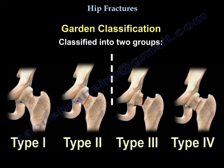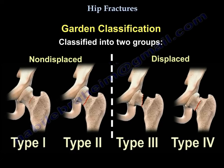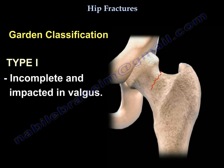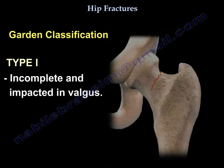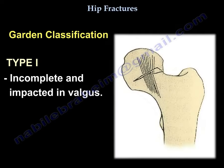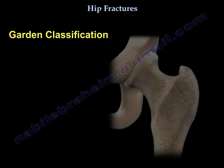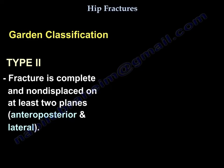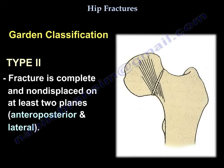The Garden classification divides fractures into two groups: non-displaced (type 1 and type 2) and displaced (type 3 and type 4). Type 1 is an incomplete fracture impacted in valgus. Type 2 is a complete fracture that is non-displaced on at least two planes: the AP and the lateral.